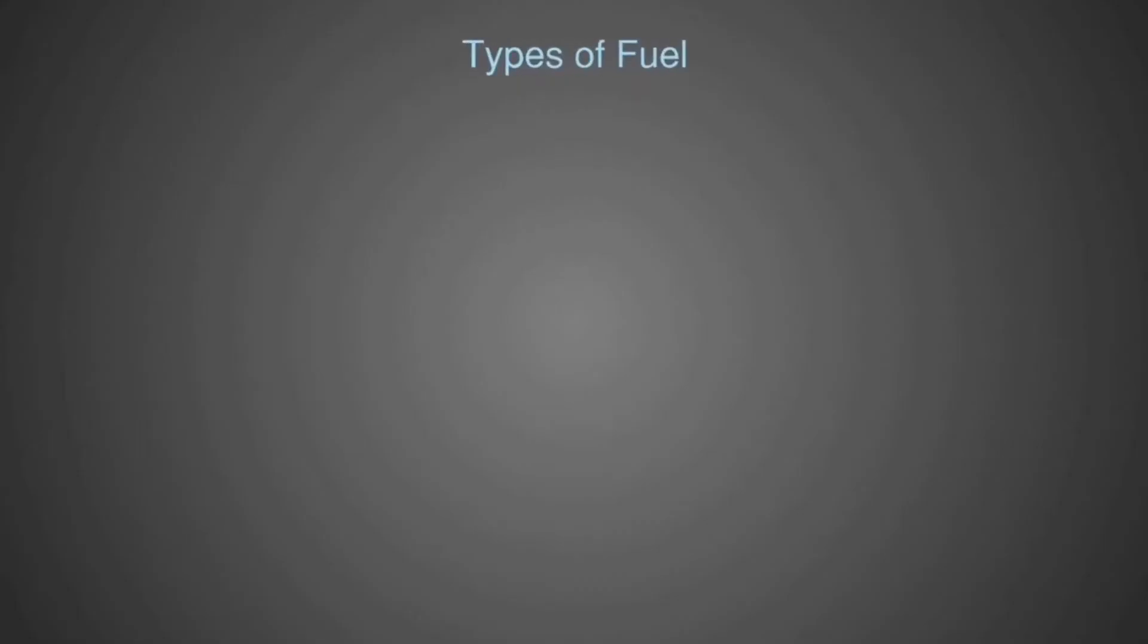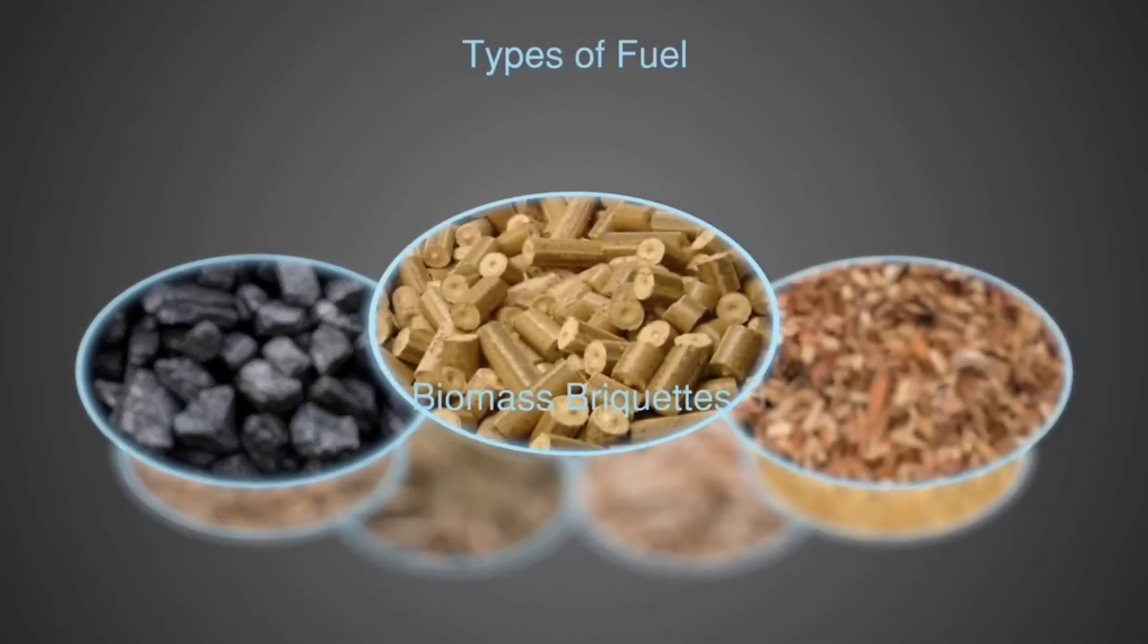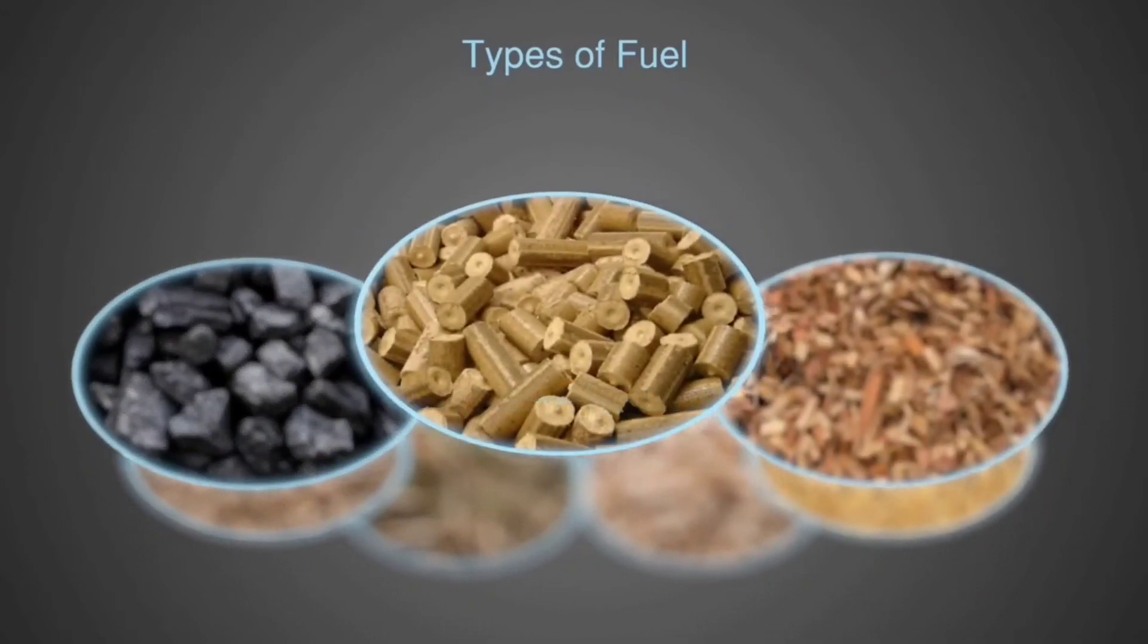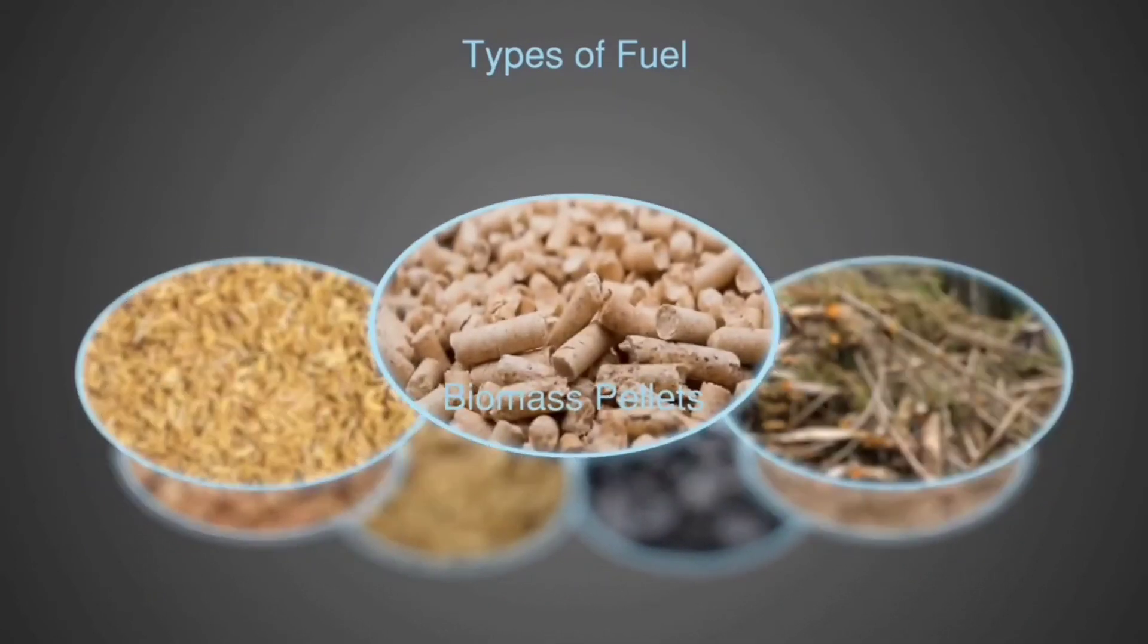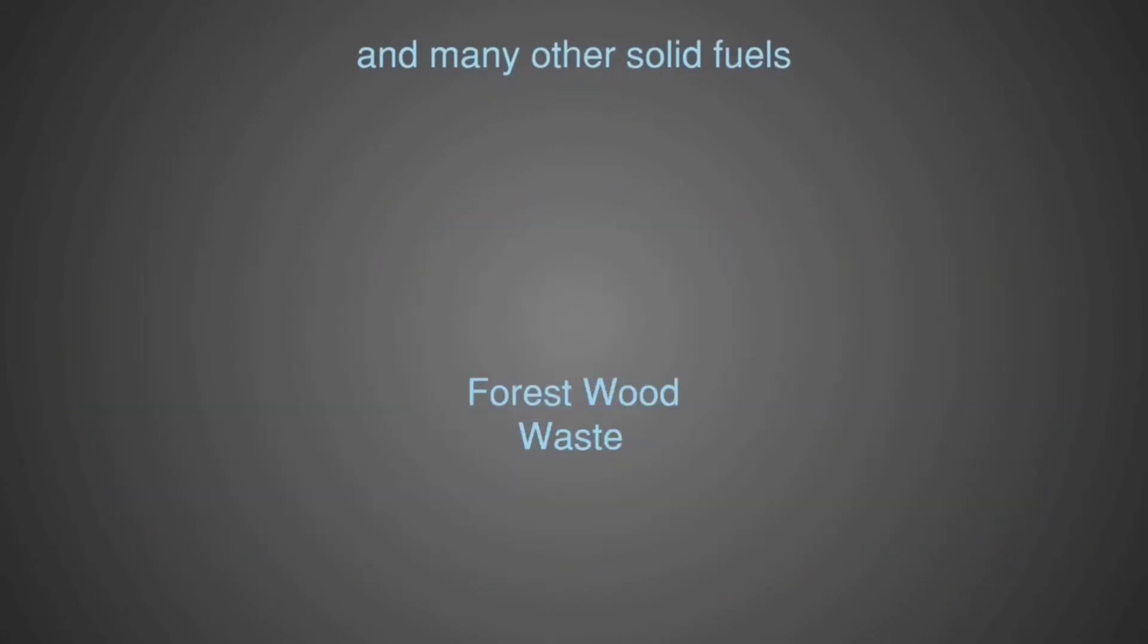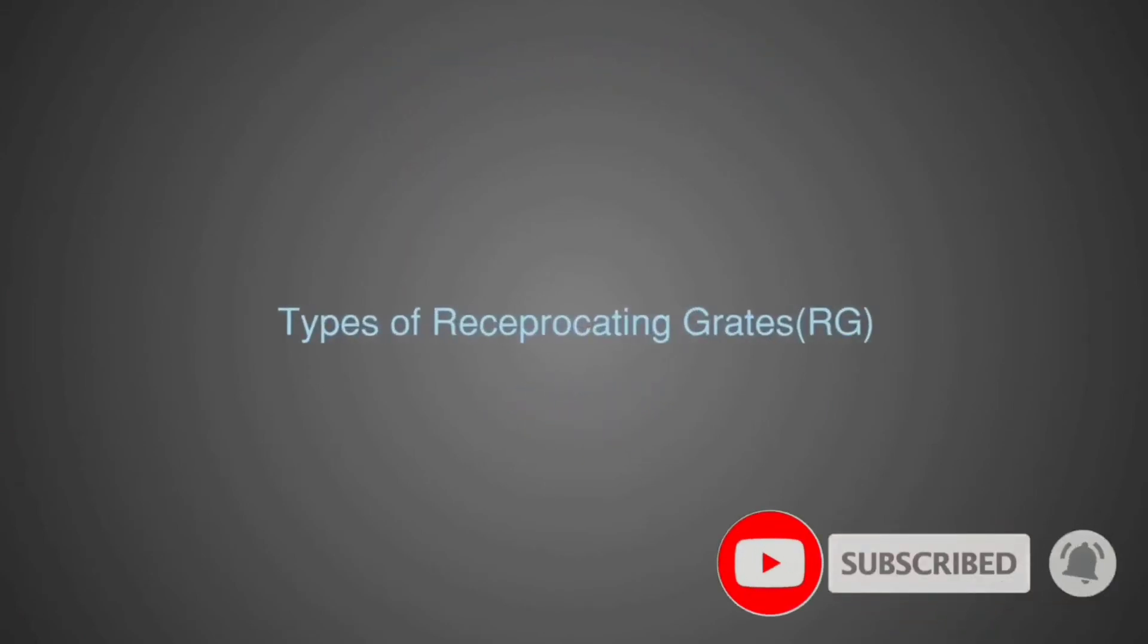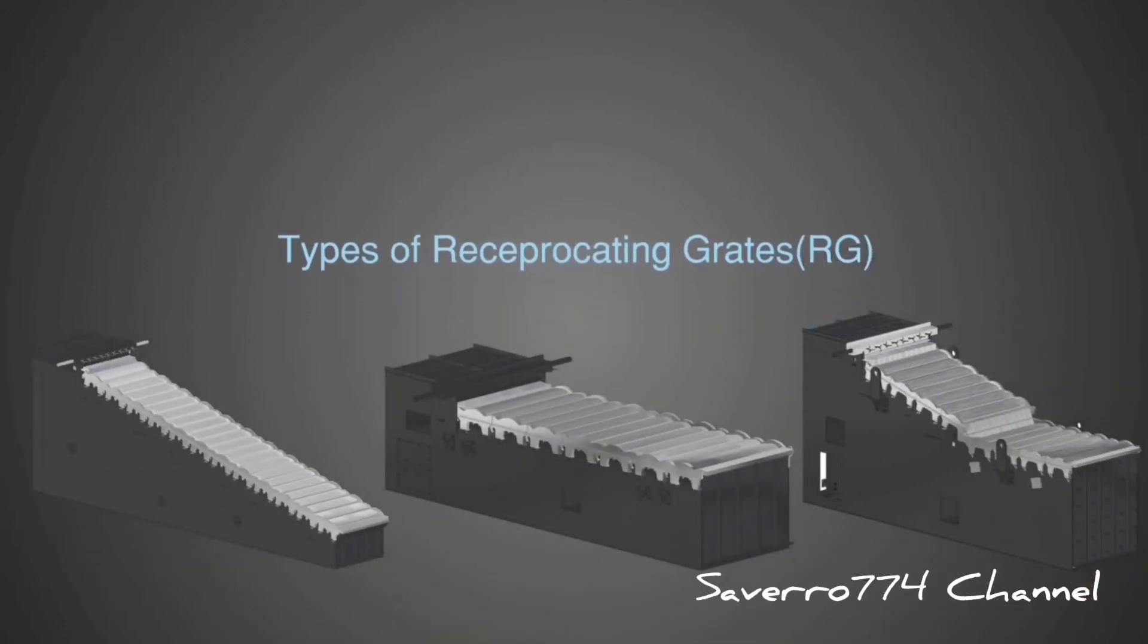This grate offers huge fuel flexibility and can burn complex fuels like imported coal, biomass briquette, wood chips, rice husk, biomass pellets, and other high moisture biomass fuels like forest wood waste and empty fruit bunch, depending on properties of fuel such as moisture content, size, and bulk density.